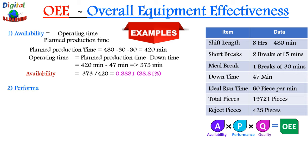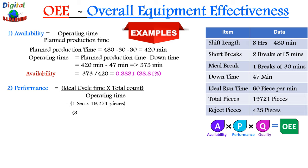Now let's calculate performance. The formula is ideal cycle time multiplied by total count, divided by operating time. Ideal cycle time is 1 piece per second, total count is 19,271 pieces, and operating time is 373 minutes. This gives us a performance score of 86.11%.